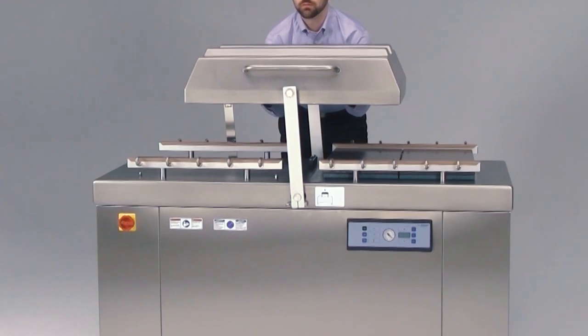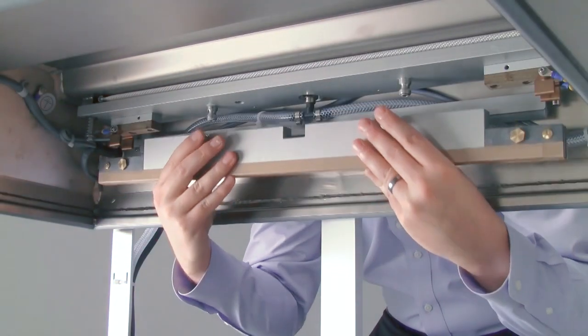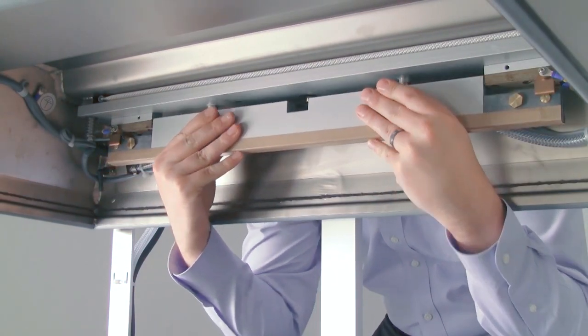To put the seal bar back in, simply take your seal bar, locate the push-in tabs, align the bar onto the holes.